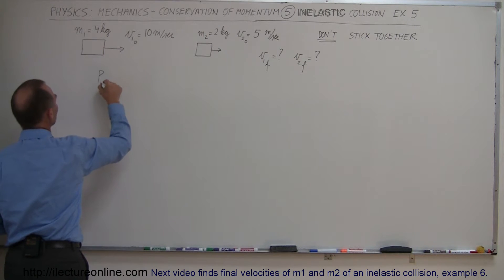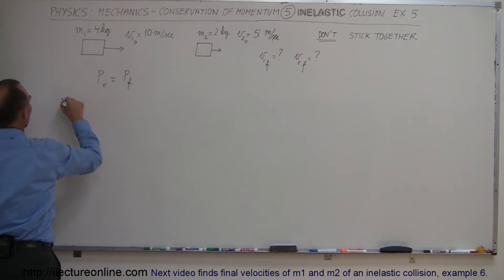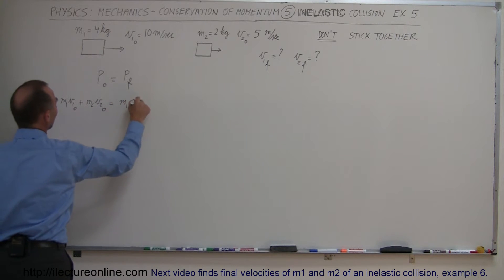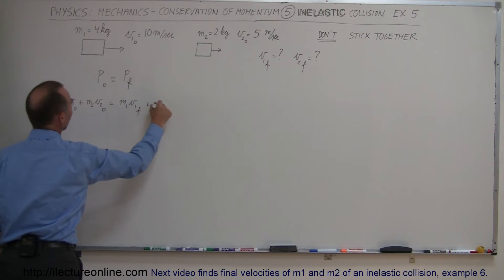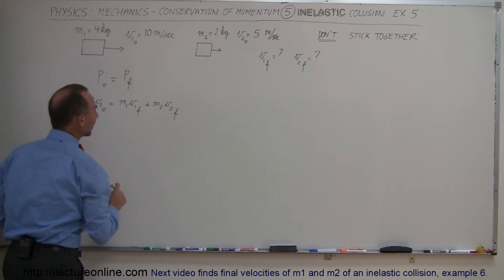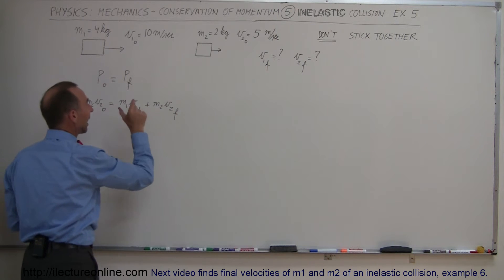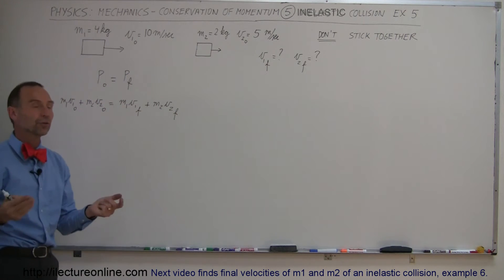We have momentum initial equals momentum final. So the equation now becomes M1 V1 initial plus M2 V2 initial equals M1 V1 final plus M2 V2 final. Since they don't stick together, you do have to account for the momentum of each of the two masses after the collision because they'll go their own separate ways.